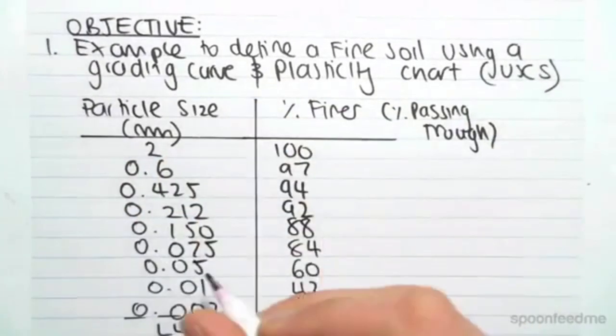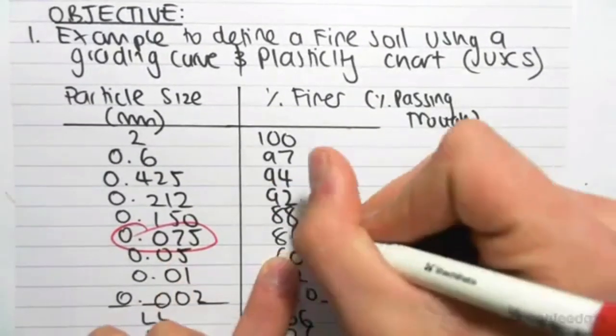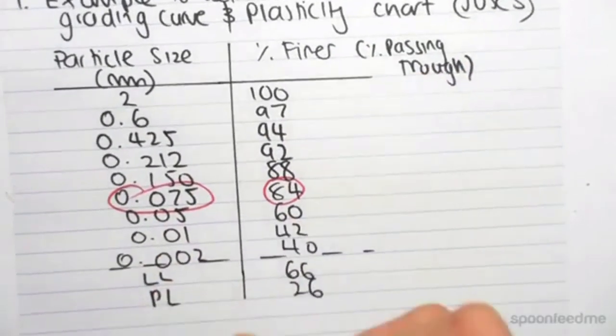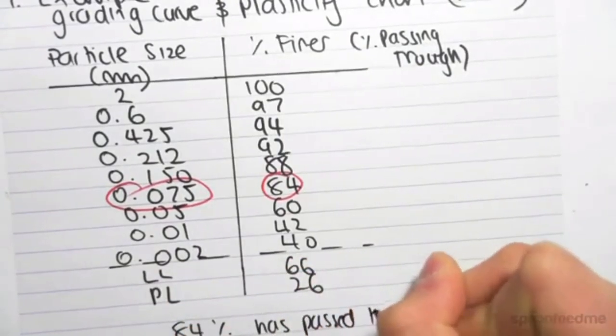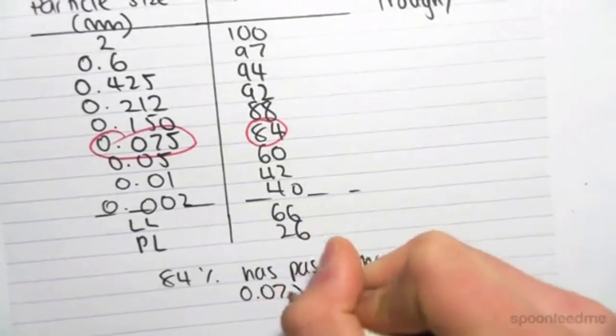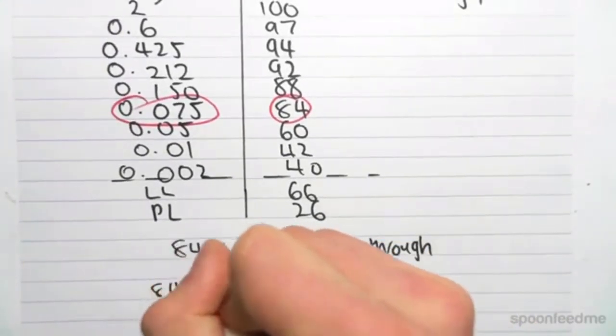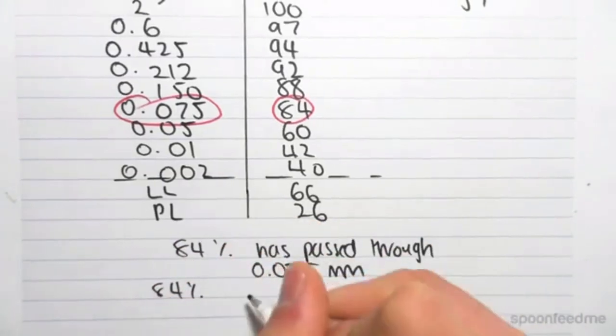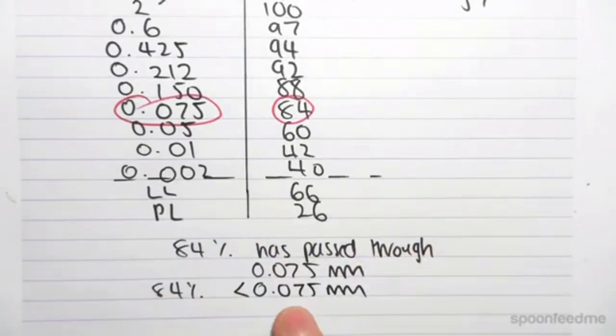So we're going to come either to our table. So if we saw 0.075, we can see that 84% has passed through. So 84% has passed through the 0.075 millimeters sieve, which means that 84% is fine. 84% of our soil sample has particle sizes less than 0.075 millimeters in diameter.